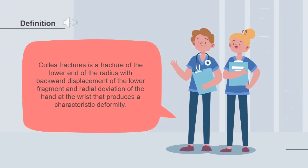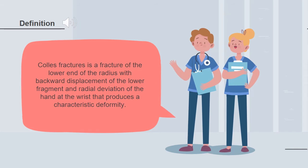Colles' fracture is a fracture of the lower end of the radius with backward displacement of the lower fragment and radial deviation of the hand at the wrist that produces a characteristic deformity.